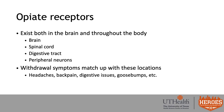Opiate receptors exist all over the brain, spinal cord, digestive tract, and throughout the body via peripheral neurons. When the system is flooded with opiates, receptors multiply throughout the entire body. This explains withdrawal symptoms — headaches, back pain, digestive issues, goosebumps — because there are receptors all over the body responding to withdrawal, registering the lack of a substance in a very physical manner.